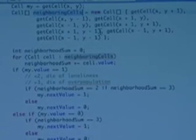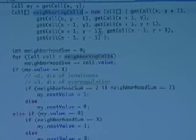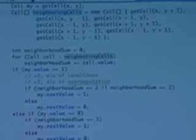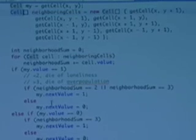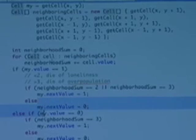So neighboring cells is get cell x, y plus one, and we go through this list of things. We basically get all the cells in our surrounding neighborhood and put them into a list. This notation means array, this is like a list, a list of cells. A cell is an object which I made which has a property of either being alive or dead.